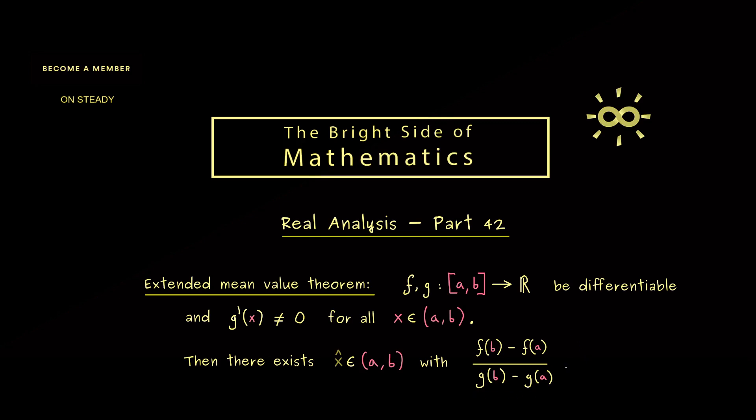Then, as in the normal mean value theorem, we get an inner point x̂ where we find the mean slope. However, here this mean slope is not a normal slope but rather a combination of the two functions f and g. The difference in the denominator is now measured with the function g. Moreover, this is not just f'(x̂) but rather f'(x̂) divided by g'(x̂). So this is an expression that combines the two functions f and g with the derivatives.